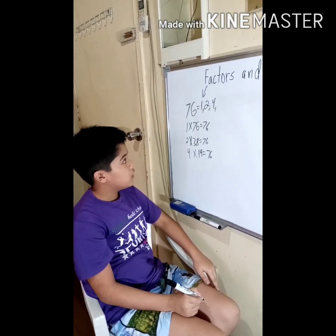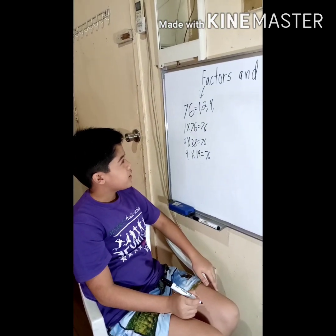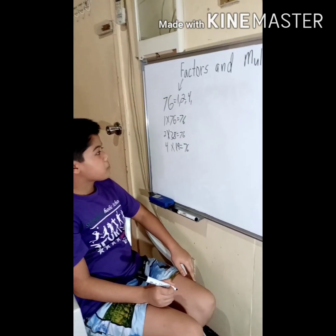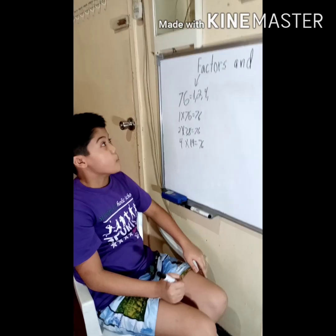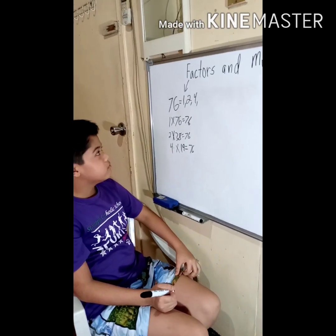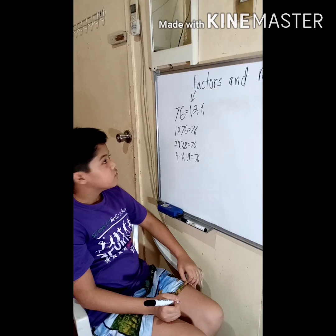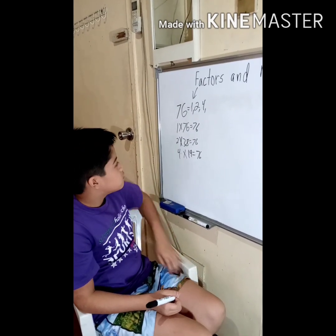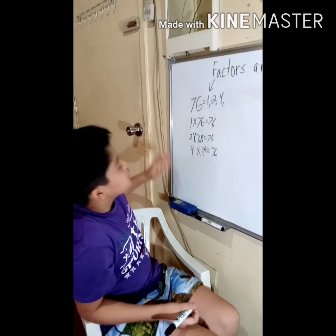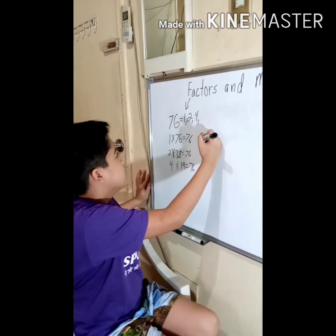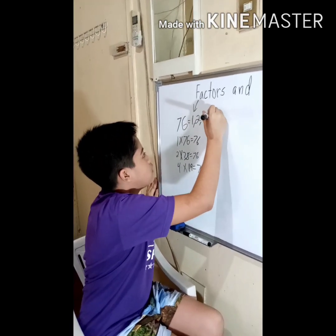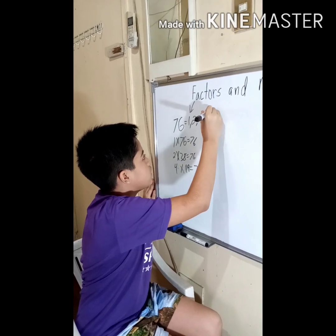7 cannot be used as well. Checking 8 and 9 — no, there are no more possible answers. So the factors of 76 are 1, 2, 4, 19, and 76.